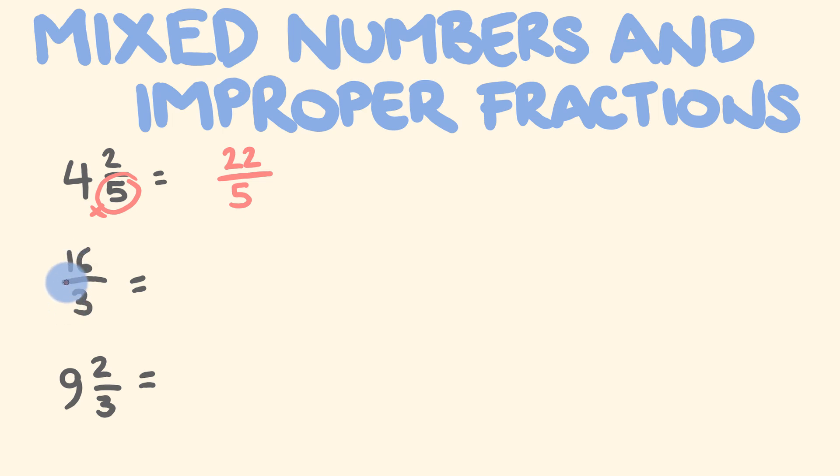16 divided by 3. 16 divided by 3 is equal to 5, and there's 1 left over. And we just put that over the denominator.